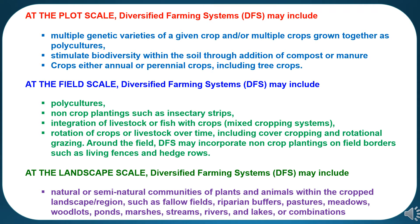At the landscape scale, diversified farming systems may include natural or semi-natural communities of plants and animals within the cropland landscape or region, such as fallowlands, riparian buffers, pastures, meadows, woodlots, ponds, marshes, streams, rivers and lakes, or many combinations.